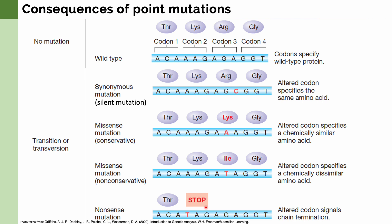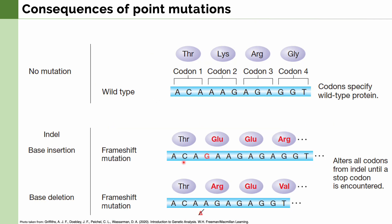Here we can see that the original codon is mutated to form a stop codon instead. Next, let's talk about the consequences of indels — base insertions and deletions. Both result in what we call a frameshift mutation, in which the entirety of the amino acid chain is altered. We can see the effect of adding a base and removing a base in the original gene sequence, and the resulting amino acid chain is totally different from the original.